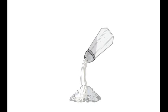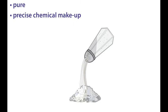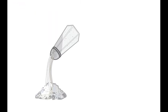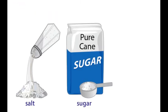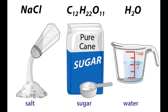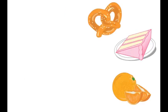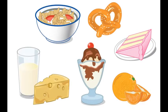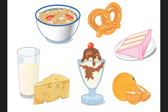A substance is a type of matter that is pure and has a specific chemical makeup. For example, salt, sugar, and water are all substances with precise chemical compositions. Although there are numerous examples of pure substances, most of the matter around us is made up of many substances. Just think of all the substances and ingredients found in the foods we eat every day.